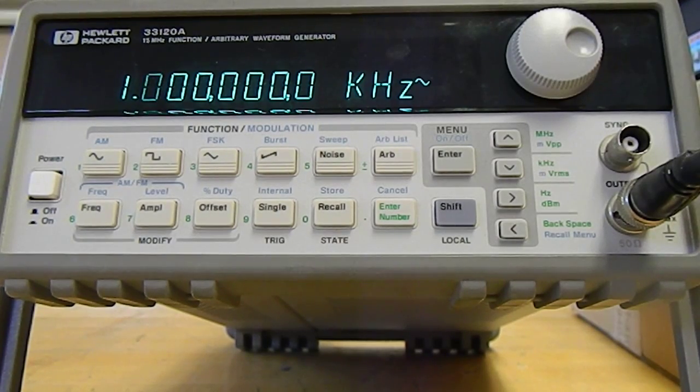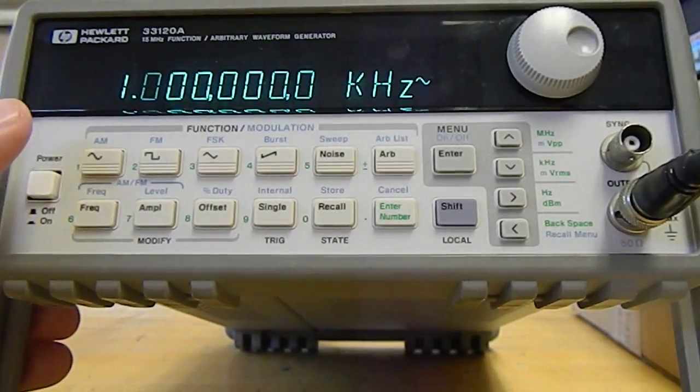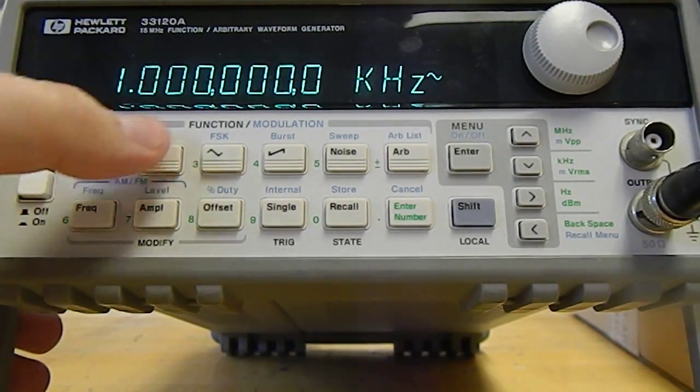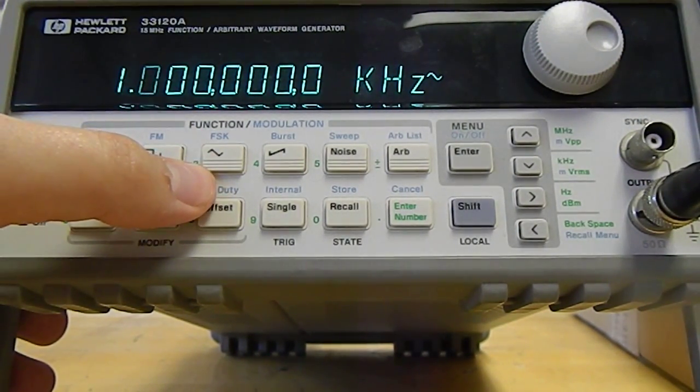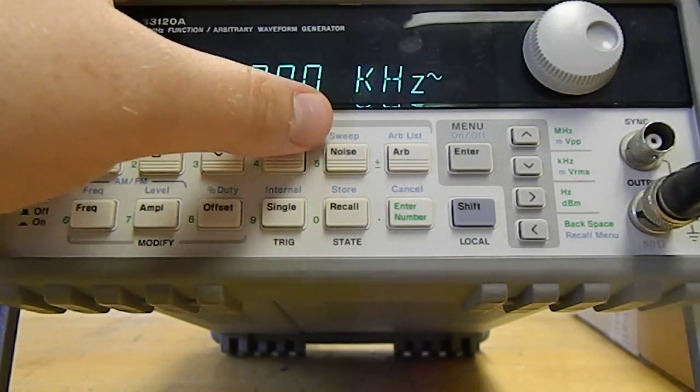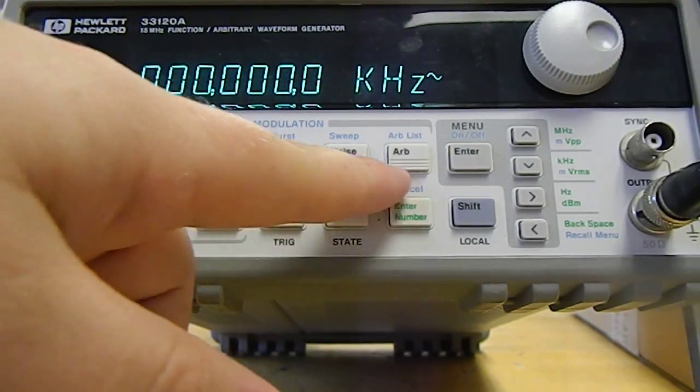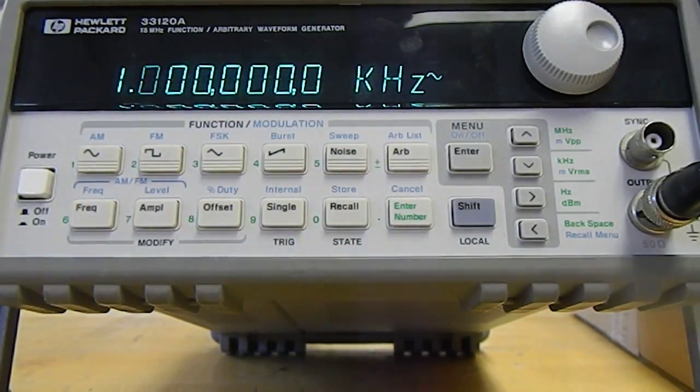You can choose your waveform along this first row of buttons. Your options are sine wave, square wave, triangle wave, sawtooth wave, noise or random, and then an arbitrary value.